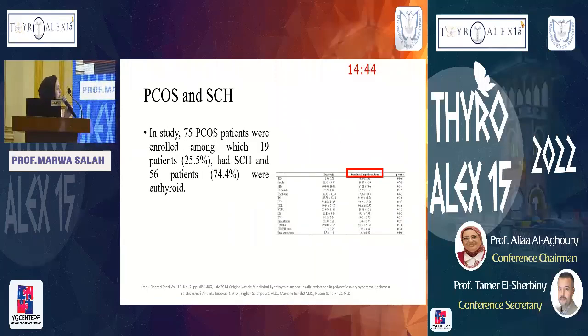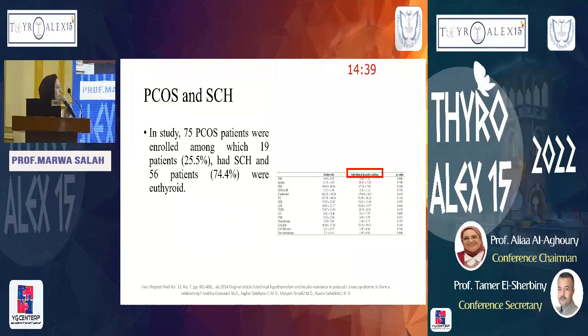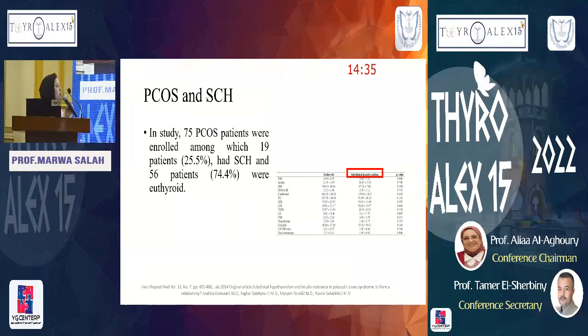Moreover, not only overt hypothyroidism, but subclinical hypothyroidism was detected in up to 25 percent of patients with polycystic ovary syndrome.